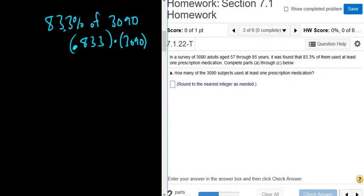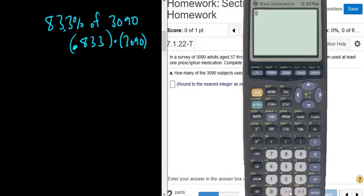So 0.833 times 3,090. All right, so now we can work this out. So it should be 0.833 times 3,090. So there it is.